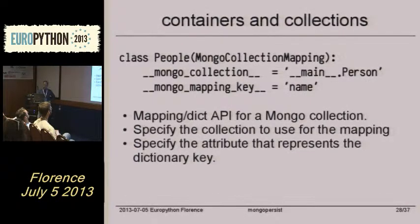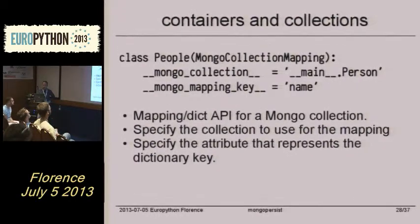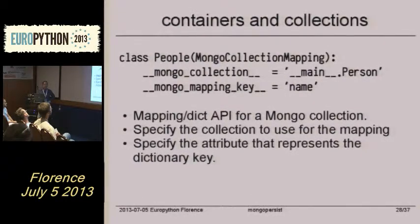Now we are getting to containers and collections. MongoCollectionMapping is a dict — actually its subclass is UserDict DictMixin — which gives you all the dict methods: getitem, setitem, delitem, keys, items, values, whatever you want.